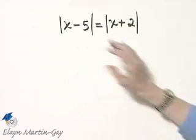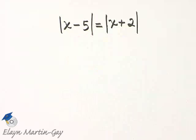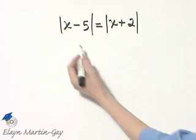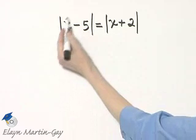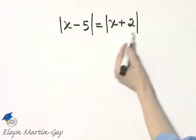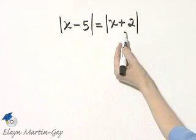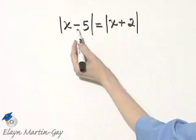Notice we have an absolute value equation. We've got an absolute value equal to an absolute value. Now, the only way this is going to happen is if x minus 5 inside the absolute value bars on the left side is equal to x plus 2 that's inside the absolute values on the right side, or if those two expressions are opposites of each other.